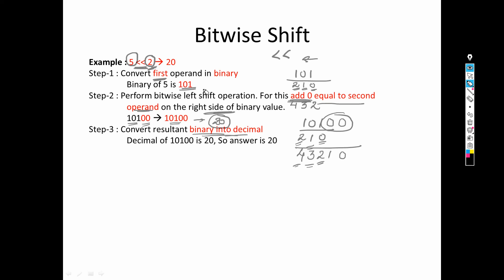In summary: we convert the first operand into binary, then shift all bits to the left by the number of positions equal to the second operand. We do this by adding zeros equal to the second operand on the right side of the binary number. Here we added two zeros, giving the resulting value 10100. You can see the difference: before shifting, a bit is on position 0; after shifting, it is on position 2 — a difference of 2.